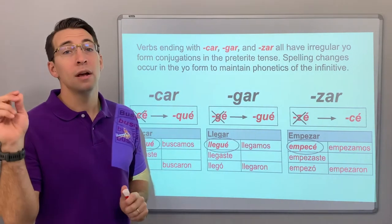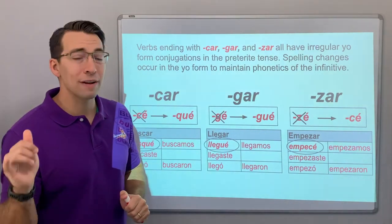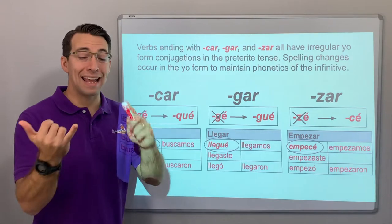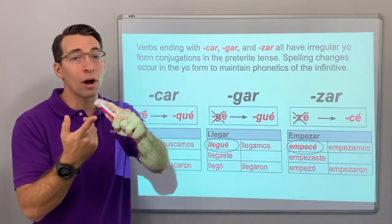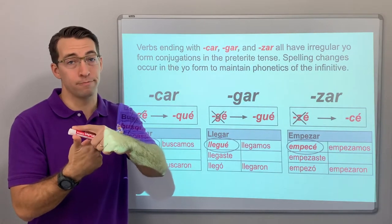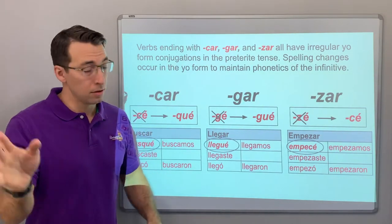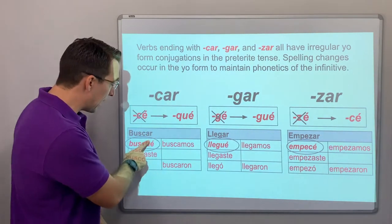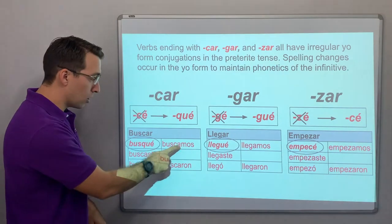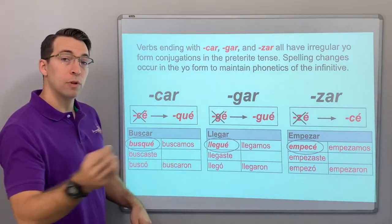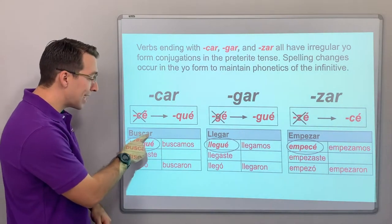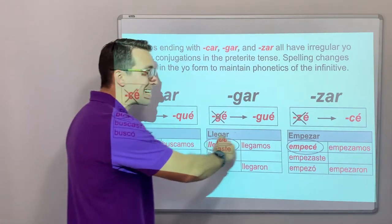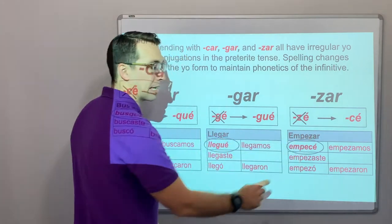Okay, so remember, AR verbs have these endings: -é, -aste, -ó, -amos, -aron. So with these verbs ending in KAD, GAD, ZAD, if you follow C with an E, it changes the sound.